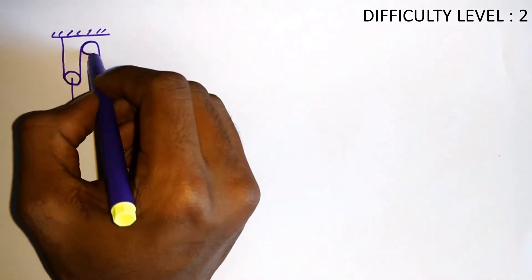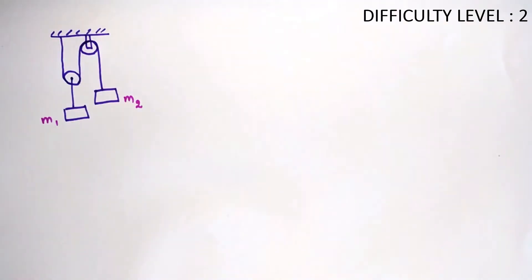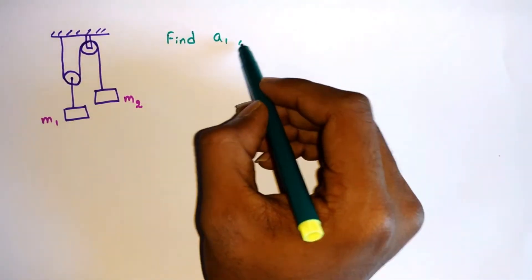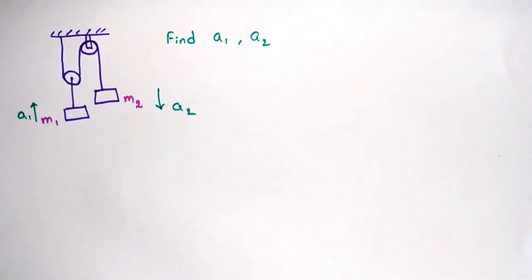Let's do the next problem. Consider a pulley mass system as shown with masses m1 and m2. a1 and a2 are the accelerations of these masses which we need to find. The direction of a2 can be taken randomly, and the direction of a1 will be opposite to that of a2.